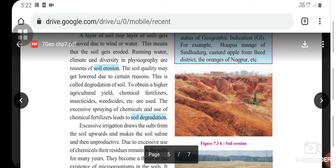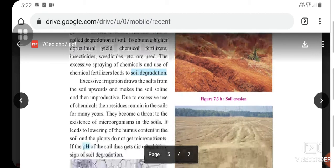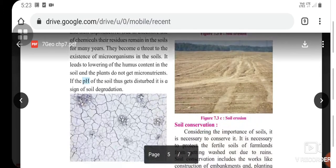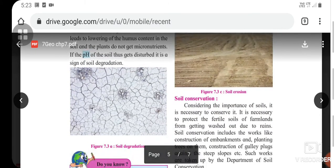The soil quality may get lower due to certain reasons. This is called degradation of soil. To obtain higher agricultural yield, chemical fertilizers, insecticides, and pesticides are used. The excessive spraying of chemicals and use of chemical fertilizers leads to soil degradation. Excessive irrigation draws salts from the soil upward and makes the soil saline and unproductive. Due to excessive use of chemicals, their residues remain in the soils for many years. They become a threat to the existence of microorganisms in the soil. This leads to lowering of the humus content in the soil, and plants do not get micronutrients.